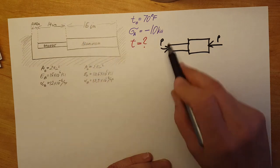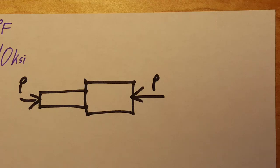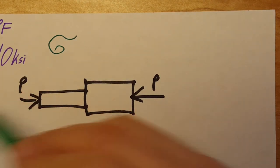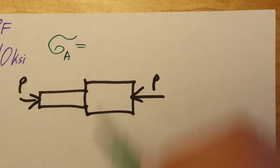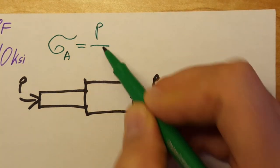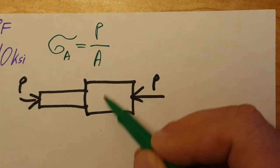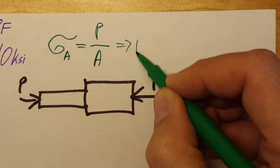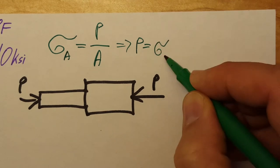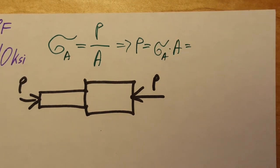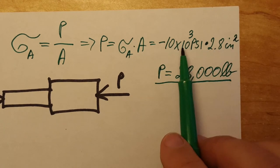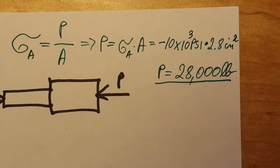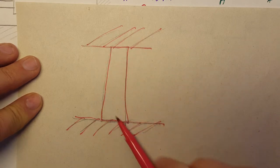Since we know the stress and the area, we can find P. We'll use the normal stress formula on the aluminum piece: normal stress equals force over area. Solving for P gives us P = normal stress in aluminum times its area. Plugging in our values, we find P = 28,000 pounds.